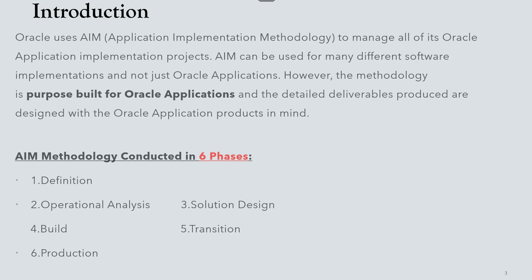Phase five is Transition. During Transition, the project team deploys the finished solution into the organization. All elements of the implementation must come together to transition successfully to actual production. The project team trains end users while the technical team configures the production environment and converts data. Transition ends with the cutover to production, when end users start performing their jobs using the new system.